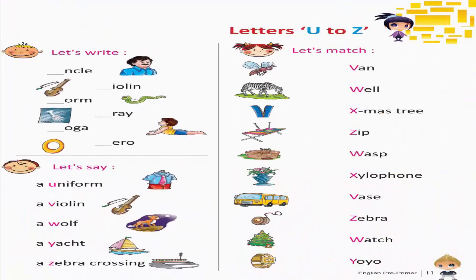Letters U to Z. Let's write. Let's match. Let's say: A uniform, A violin, A wolf, A yacht, A zebra crossing.